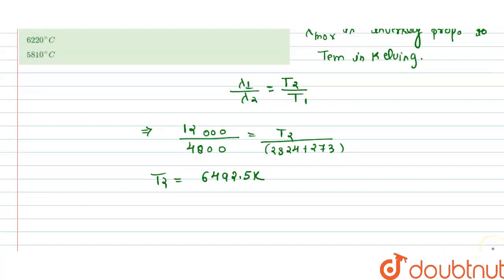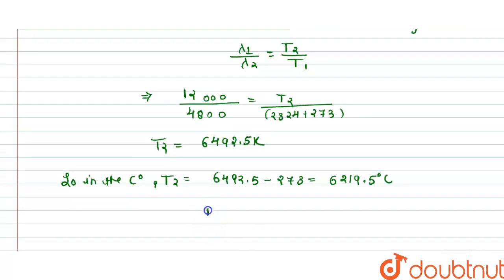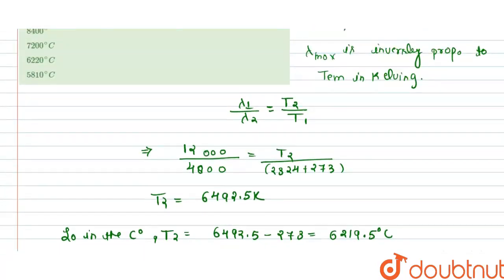In the centigrade, T2 that is equals to 6492.5 minus 273, that is equals to 6219.5 degree centigrade. This is approximately equals to the value 6219 degree centigrade.